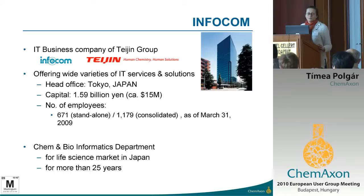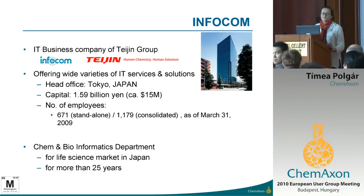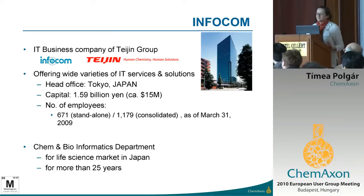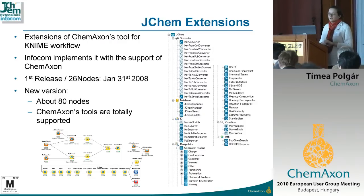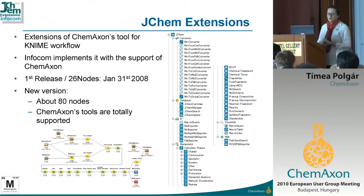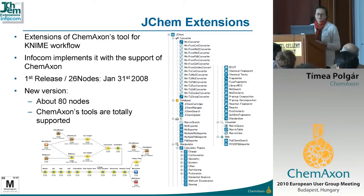The nodes are not developed by ChemAxon. I would like to introduce Taka, who develops the nodes. This is a Japanese company — Infocom — and you can see the description and details. Infocom develops nodes for all ChemAxon products. We have at the moment about 80 nodes, and as far as I know, 95% of the product map is covered.